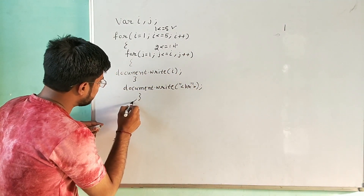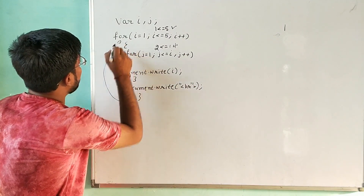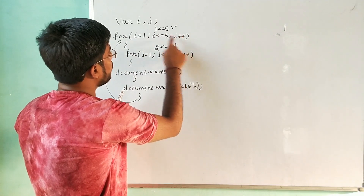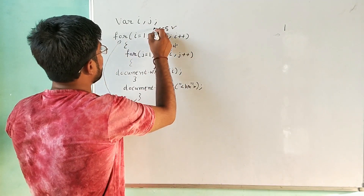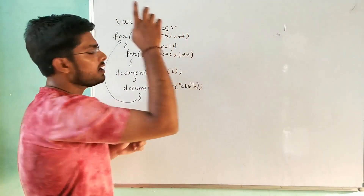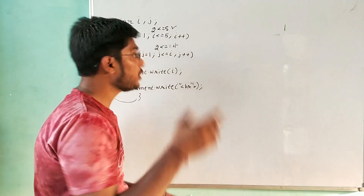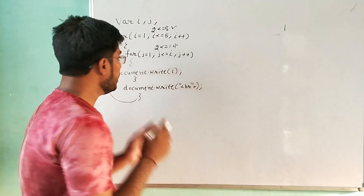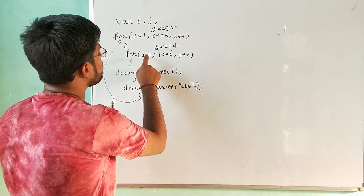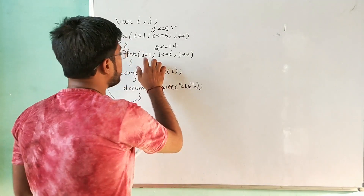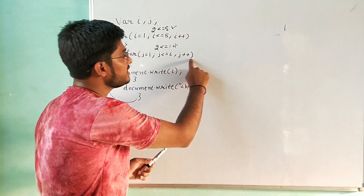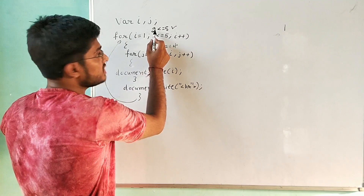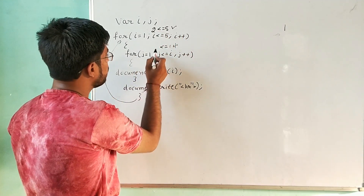i is now 2. It checks: is 2 less than equals to 5? Yes, condition is true. It goes to the inner loop again. Notice that j is always re-initialized to 1 when we re-enter the inner loop. i is 2 and j is 1. It checks: is 1 less than equals to 2? Yes, condition is true. It prints the value of i, which is 2.